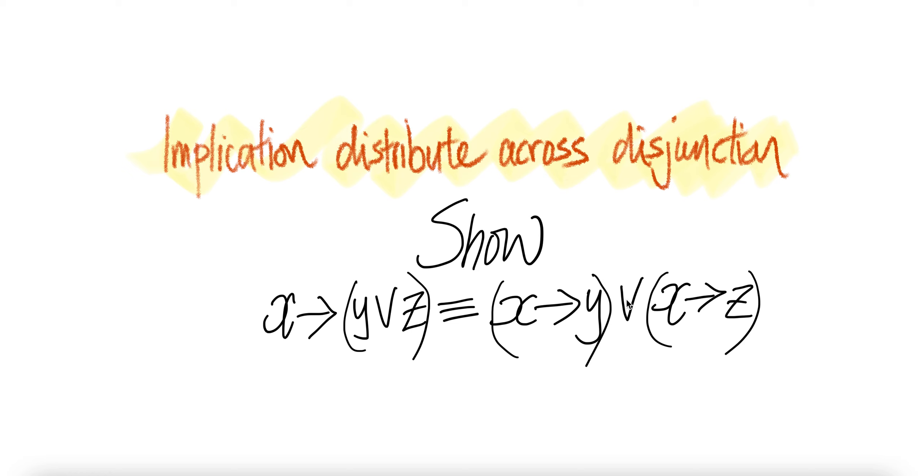Okay, so if you go from here to here, assume that we can take out x implication, then you just put y or z.